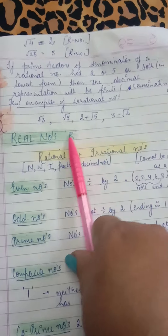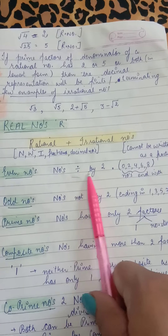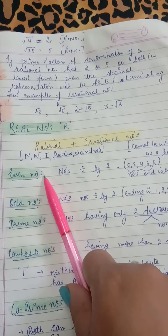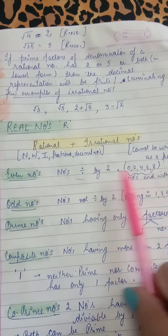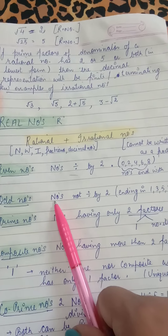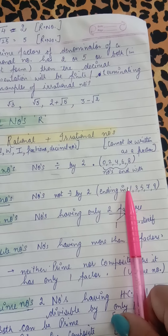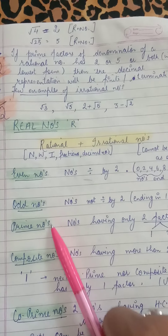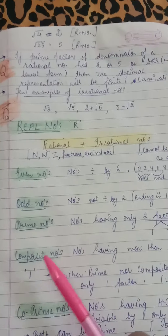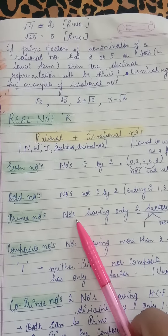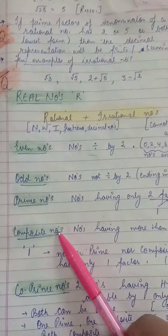Real numbers, denoted by capital R, are all rational and irrational numbers together. Even numbers are all numbers divisible by 2 — in other terms, numbers ending with 0, 2, 4, 6, or 8. Odd numbers are numbers not divisible by 2, or numbers ending in 1, 3, 5, 7, or 9. Prime numbers are all numbers having exactly two factors, meaning numbers divisible only by 1 and themselves.